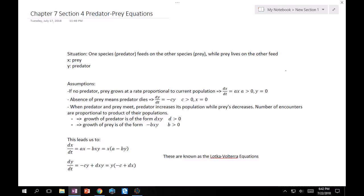So there's a couple of assumptions that we need to make in this model. If there's no predator, then the prey grows at a rate proportional to the current population. Therefore, dX/dt, the rate of growth, the rate at which the population is changing, is equal to A times X, where A is greater than zero, so it's a positive increase in population when Y is equal to zero, so when there's no predator.